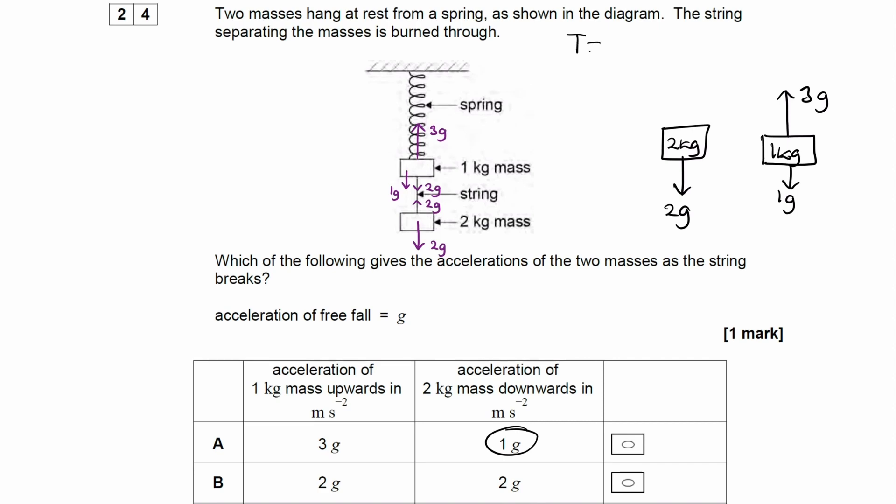The tension in a spring is equal to kx, where k is the spring constant and x is the extension of the spring. As soon as the string breaks, the spring's extension will still be the same as it was before. There hasn't been enough time for the 1kg mass to move upwards. Hence, the tension in that spring will remain the same, 3g.